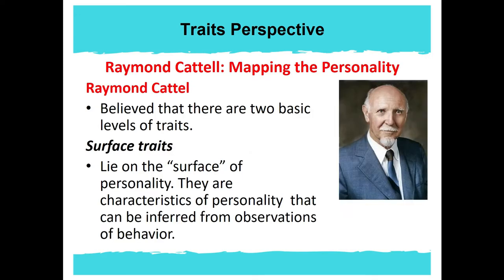Another contributor to the traits perspective is Raymond Cattell, who authored 'mapping the personality.' Raymond Cattell believed there are two basic levels of traits. First, surface traits lie on the surface of your personality — characteristics that can be inferred from observations of behavior. These are associated with adjectives commonly used to describe personality, such as friendliness, stubbornness, emotionality, and carelessness.